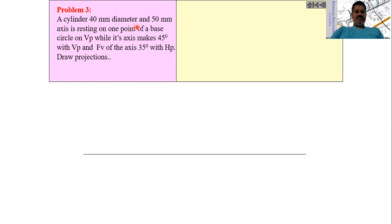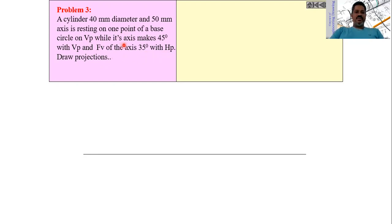A cylinder of 40 mm diameter and 50 mm height is resting such that one of the points of the base is making an angle of 45 degrees with the vertical plane, and the front view is making an angle of 35 degrees with the horizontal plane. That means the axis makes 35 degrees with HP. These are the two conditions with which we have to draw the projections of this cylinder.